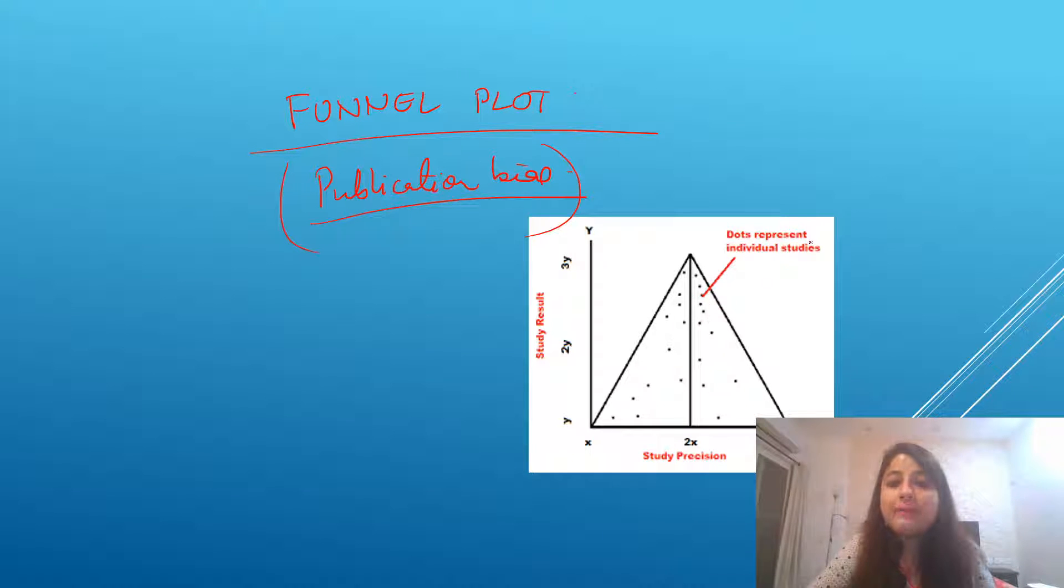These dots represent individual studies. Publication bias hota hai, often only the studies with positive findings are included in published literature. We forget to include or do not include the studies with negative findings. But please remember, studies with negative findings are also equally important.